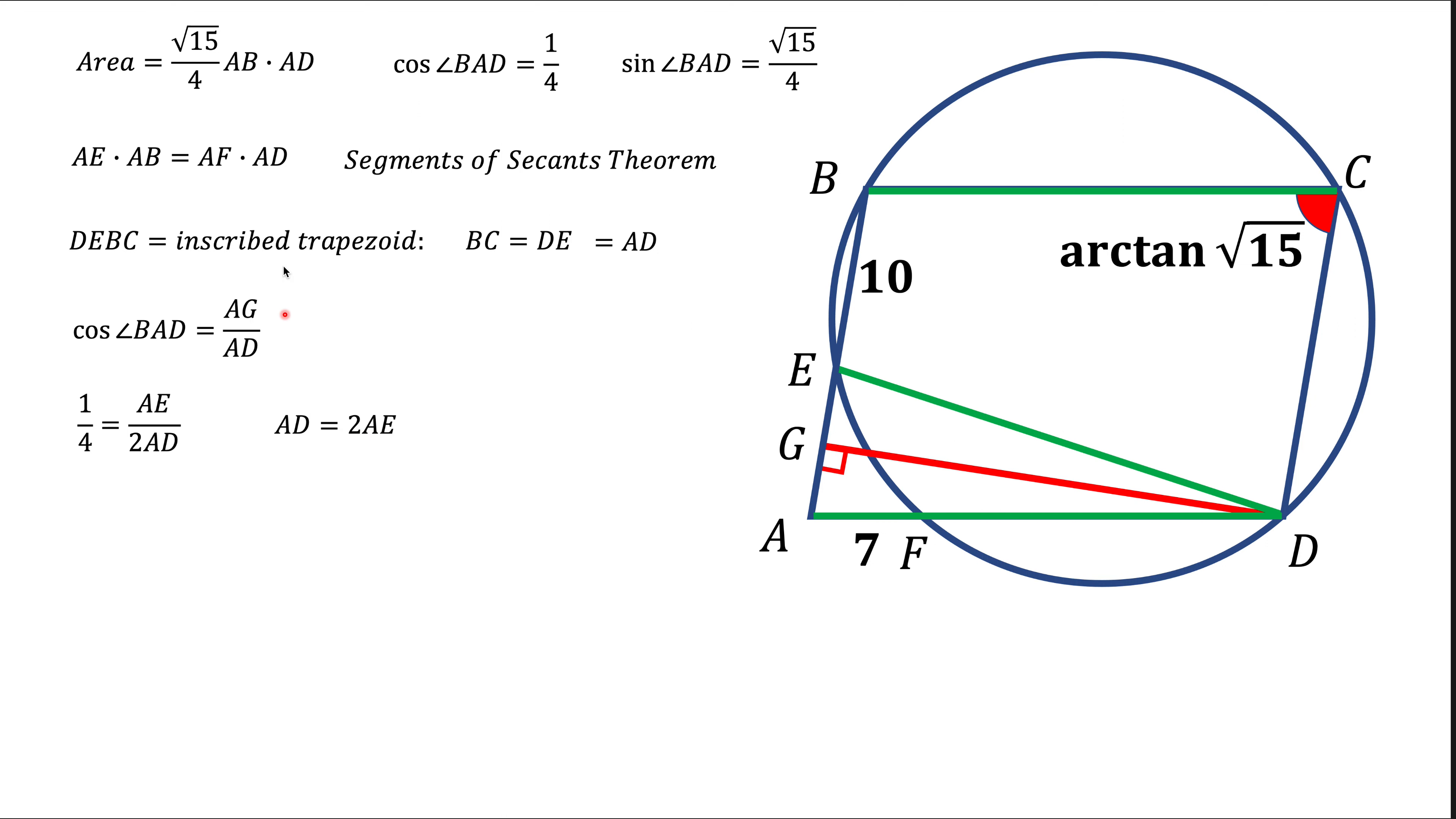And now what we're going to do, we're going to replace AD in this formula with this expression. If we do what we're going to have, we're going to have AE on the left, AE on the right, and they're going to cancel out. As the result, we're going to get that AB is 2AF. And we know AF - AF is 7, so AB is 14. The next thing we need for this formula to work for the area is to find AD. Now AD over here, we know it's 2AE. And AE we can find now, because we know AB and we know BE. Now we have all the information we need to find the area of parallelogram. And the area of parallelogram is going to be 28 square root of 15.